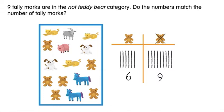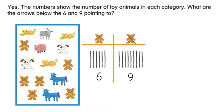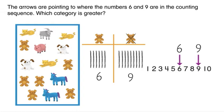Do the numbers match the number of tally marks? Yes. The numbers show the number of toy animals in each category. What are the arrows below the six and nine pointing to? The arrows are pointing to where the numbers six and nine are in the counting sequence.